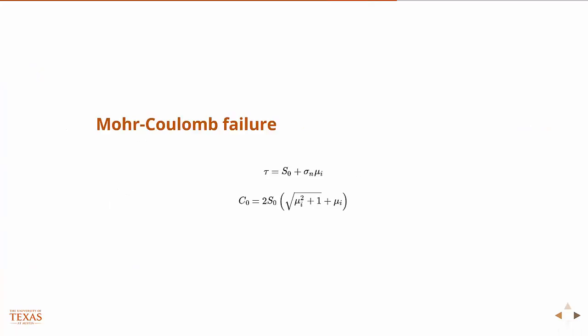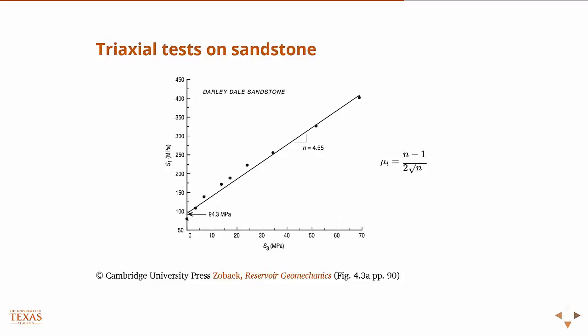There's the equation again. There's a relationship between the unconfined compressive strength and the cohesion. Here's how you might actually go about doing it. You go to the lab, you do some triaxial tests. These are actual tests carried out on sandstone. You're controlling s1 and s3. When the sample fails, you put a dot on the s1, s3 axis. You vary s1 and s3, and you put a dot.